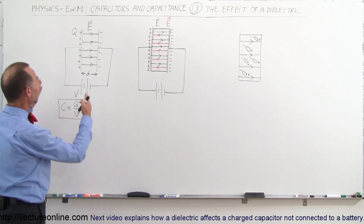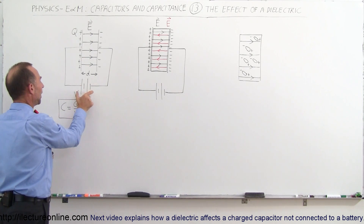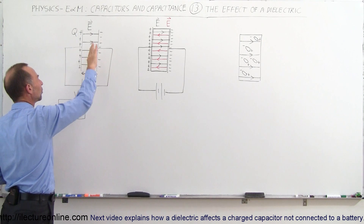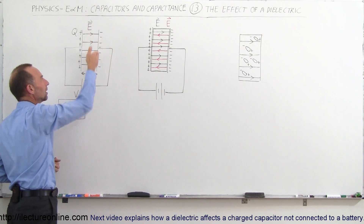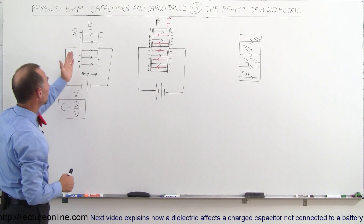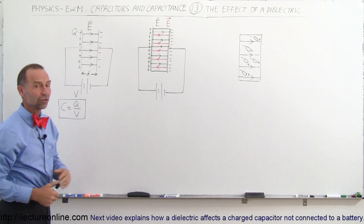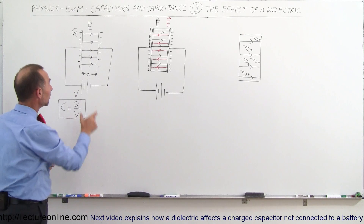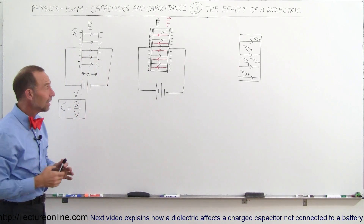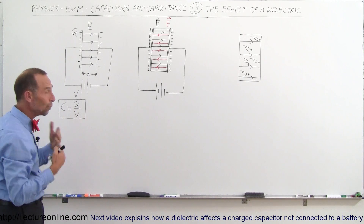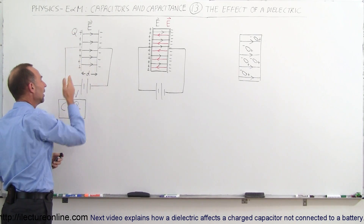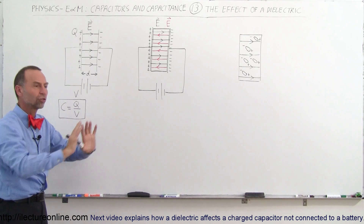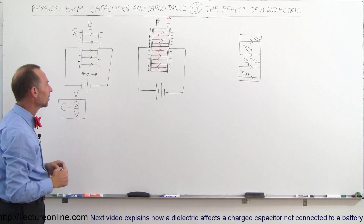First, we'll start with a capacitor that does not have a dielectric. A battery or voltage source pushes positive charge onto one side, which pushes away the excess positive charge on the other side, making it negatively charged. There's an equal amount of positive and negative charge on either side, which sets up an electric field between the plates. Assuming the distance between them is d and the surface area is A, the capacitance is simply the ratio of how much charge is pushed onto the plate divided by the potential that does the pushing — a potential difference causes charges to be pushed in one direction.